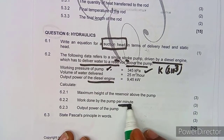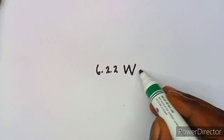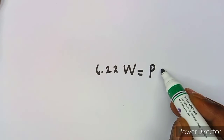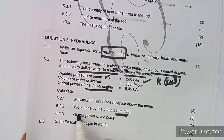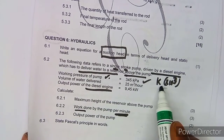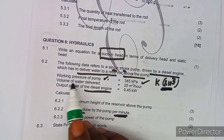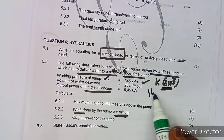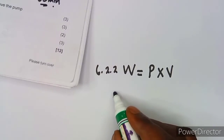The next question on 6.2.2 asks us to calculate the work done by the pump per minute. The work done is the working pressure multiplied by the volume. The working pressure must be in pascals, so you multiply by 10³. The volume is given per hour, and since there are 60 minutes in an hour, you divide by 60 to get the volume per minute.